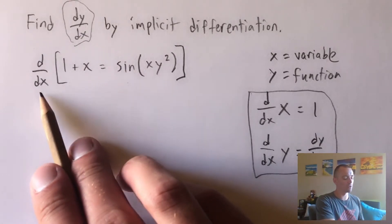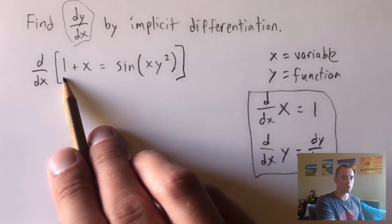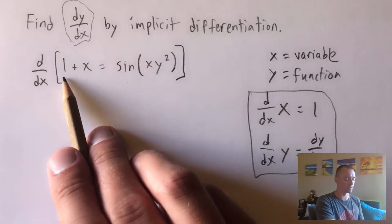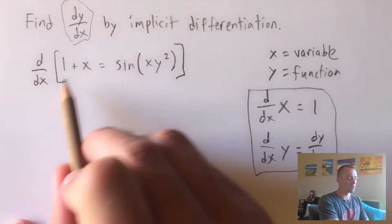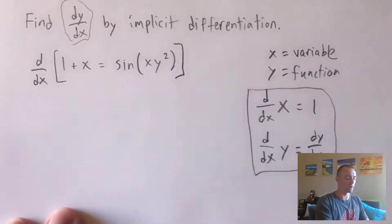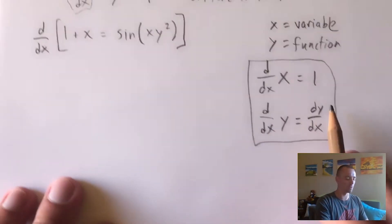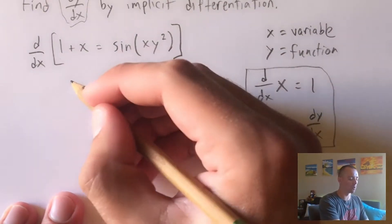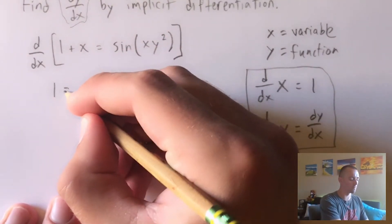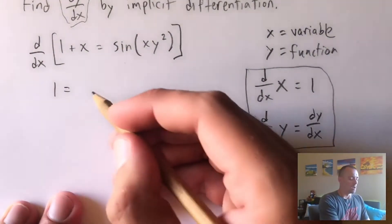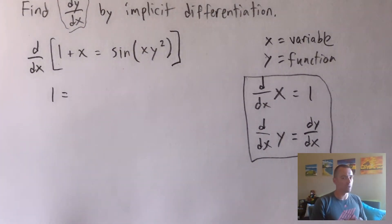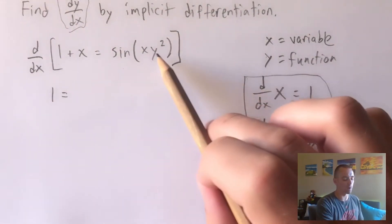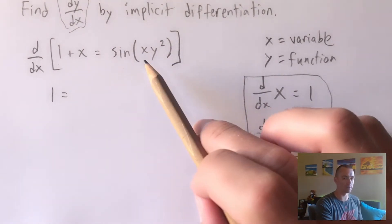Taking the derivative with respect to x of a constant is always zero, so the derivative of 1 is zero. The derivative of x with respect to x is just one. So the derivative of the entire left side of our equation is zero plus one, which is just one. Now to take the derivative of the trig piece on the right, we have x's and y's being plugged into a sine function.